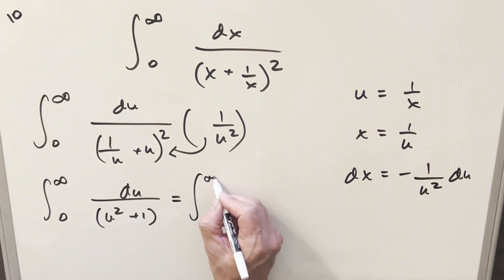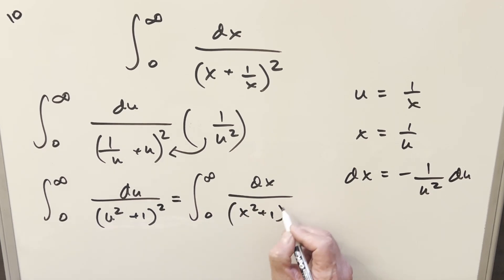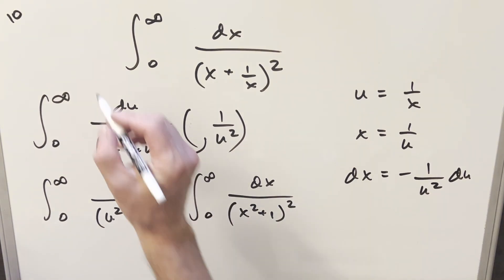let's do a variable change. Let's get it back to x. Because it's a definite integral, we can change the variable. So let's write it as dx over x squared plus 1. Sorry, I forgot the square here. This is all squared.